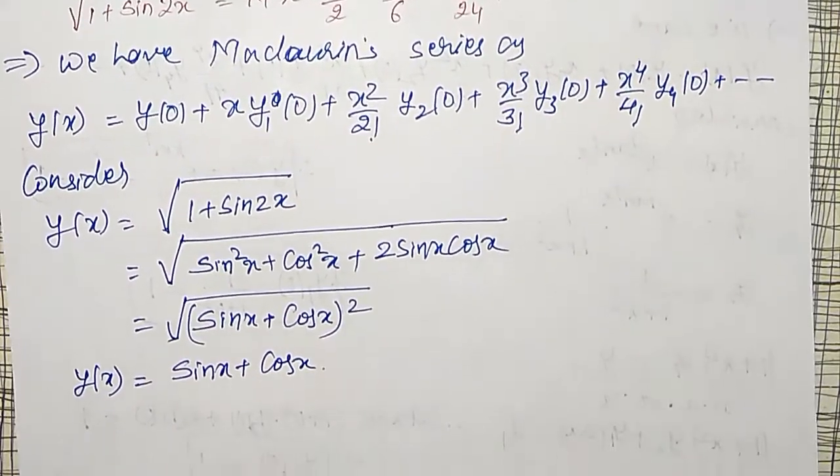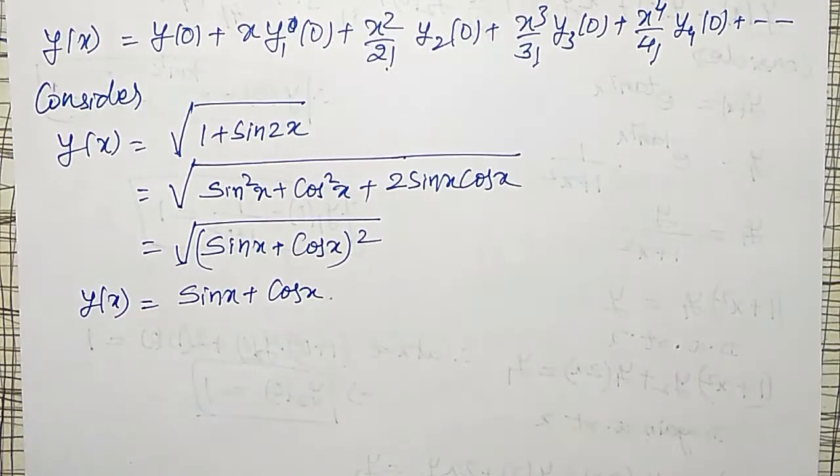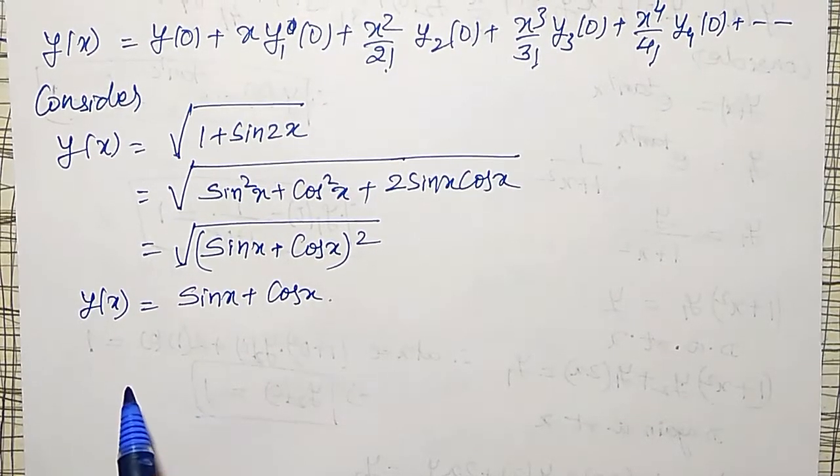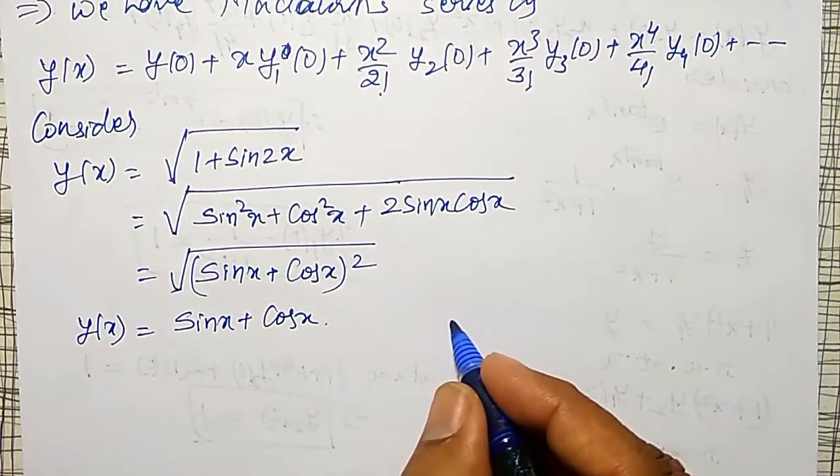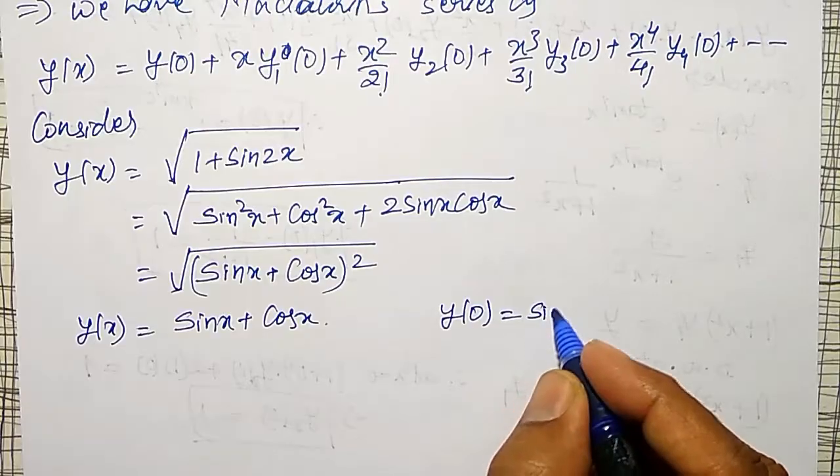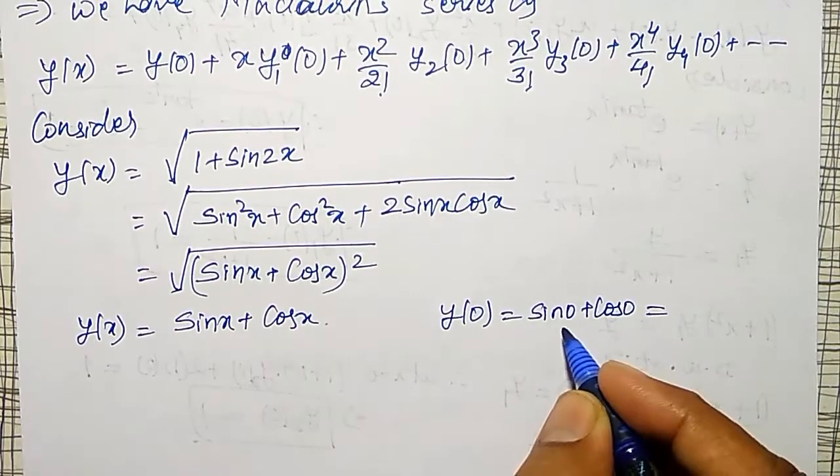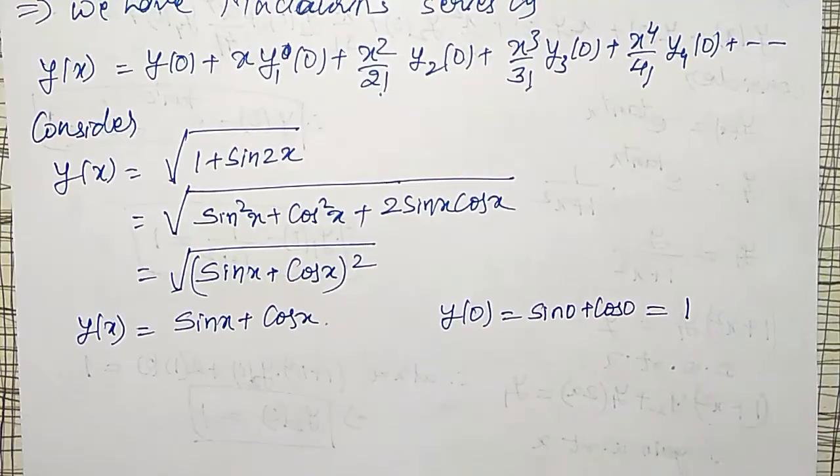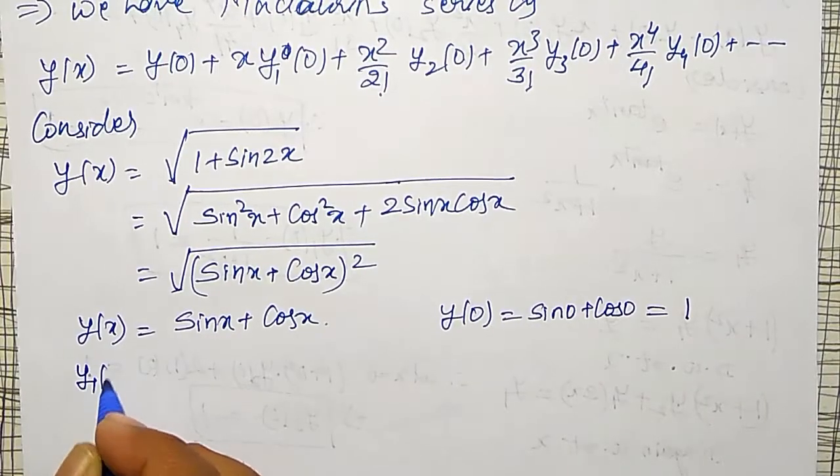Now, square and square root will cancel. Then we will get y(x) is equal to sin x plus cos x only. This is the simplified form of this one, and differentiation will become very simple. Therefore now I want to find out y of 0. Therefore y(0) will become sin 0 plus cos 0.